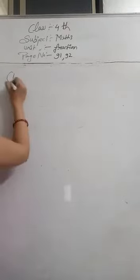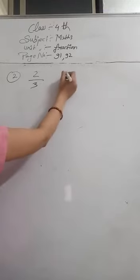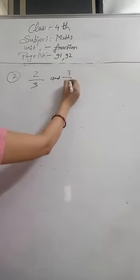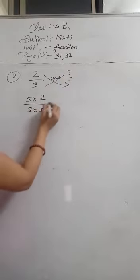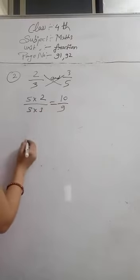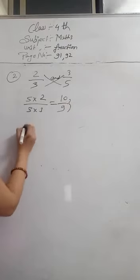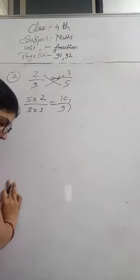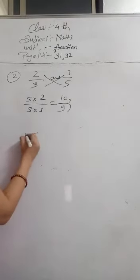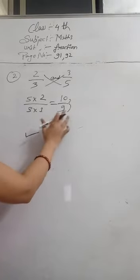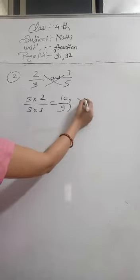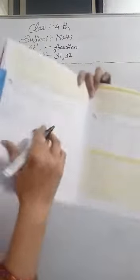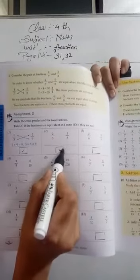First question is already done. Now we will do number 2. So here is 2 by 3 and 3 by 5. We will do cross multiplication: 5 multiply 2 and 3 multiply 3. 5 twos are 10 and 3 threes are 9. These are not equal. If they are equal we put a tick sign, and if they are not equal we put a cross sign. So these are not equal, so we will put a cross sign here.